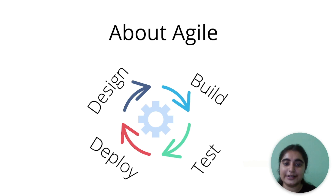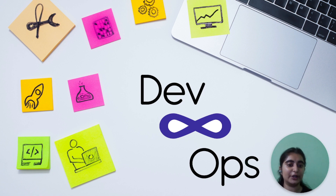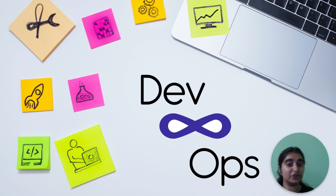DevOps is based on this agile foundation. As you can see, the DevOps logo is also an infinite loop, representing how the whole cycle of development and operations — which combined we call DevOps — continues going around and around continuously.